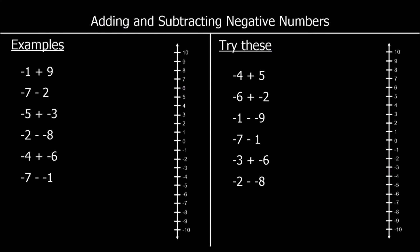Adding and subtracting negative numbers. We need to know that if we plus a negative, that's the same as taking away. If we take away a positive, that is taking away. And if we subtract a negative, that's the same as adding. We can use a number line for that as well.